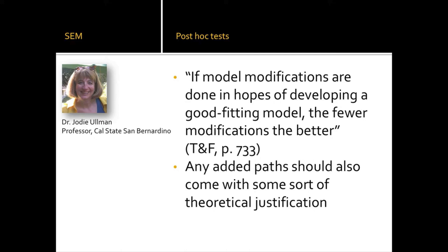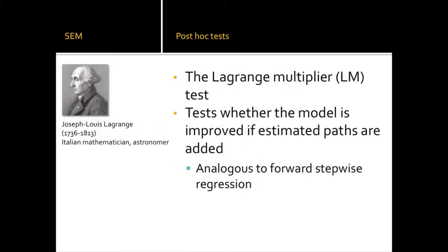Adding paths wildly without justification is tempting because it may boost model fit. What R gives you is a list of suggested modifications that are purely mathematical with nothing to do with theory. Your job is to assess them — go back and see if a connection between two variables makes sense based on prior theory, then include a citation when you add it. You can't just say you followed the LaGrange multiplier test, even though that is the mathematical mechanism.